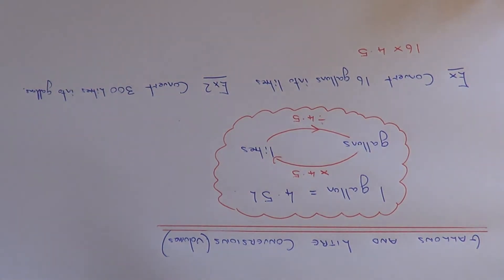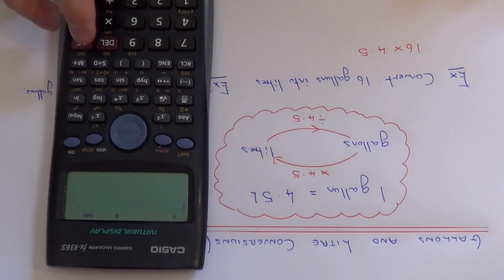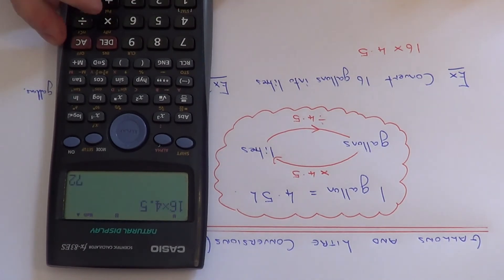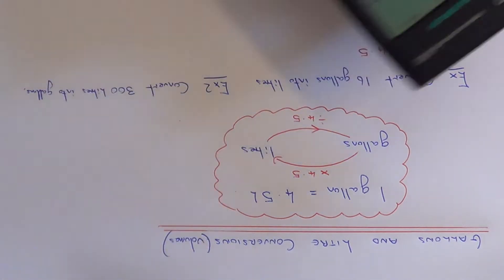So if you get your calculator and work this one out, 16 times 4.5 gives us an answer of 72 litres.